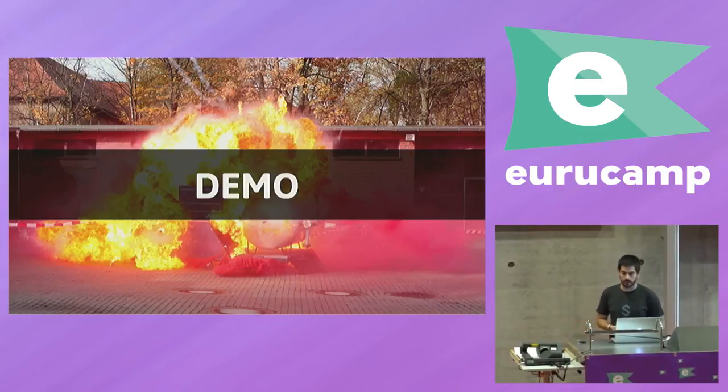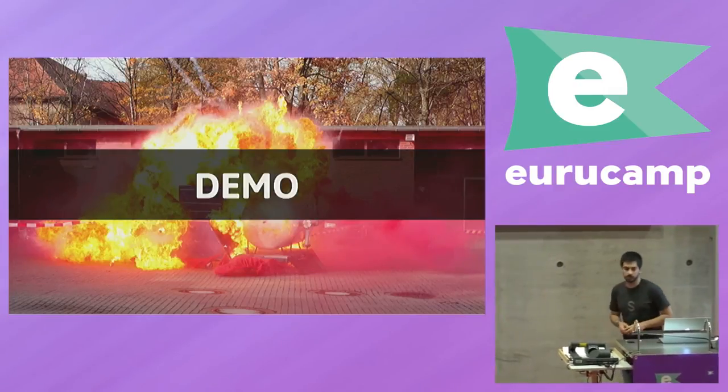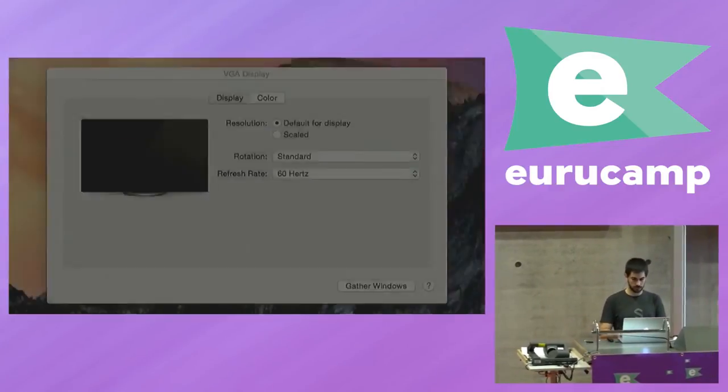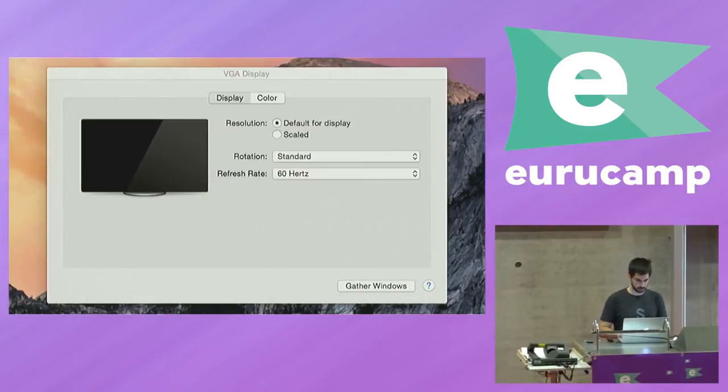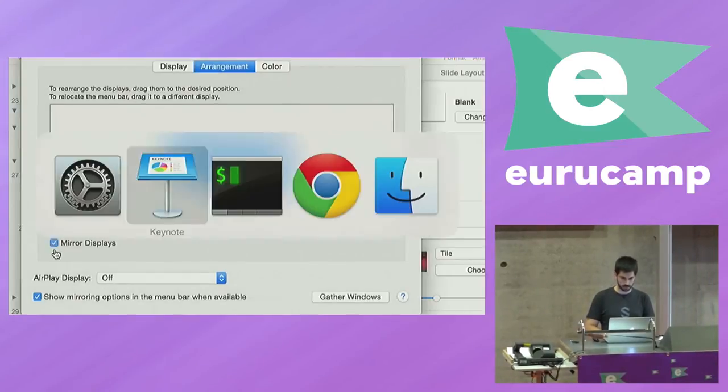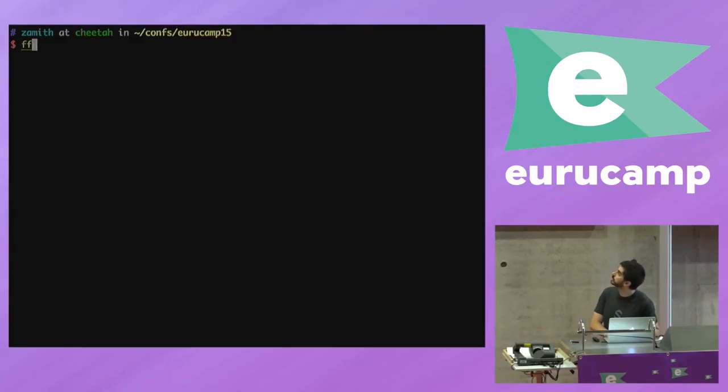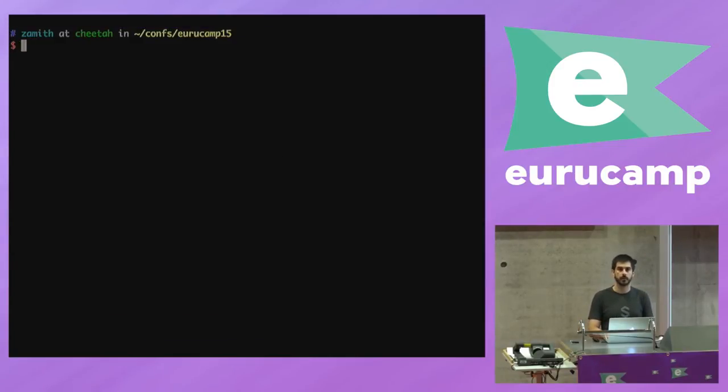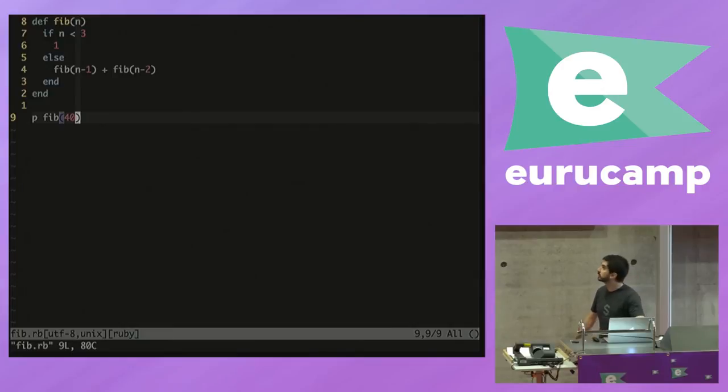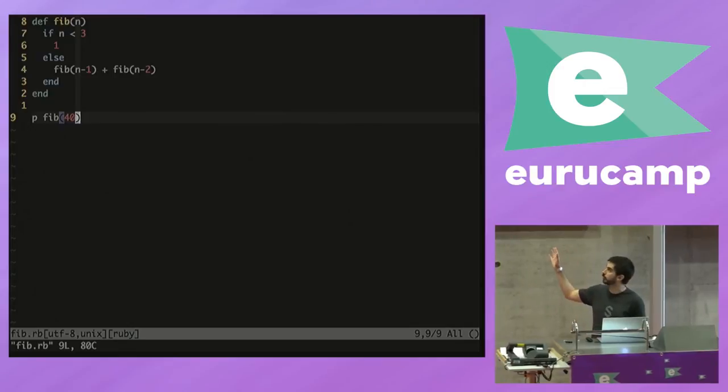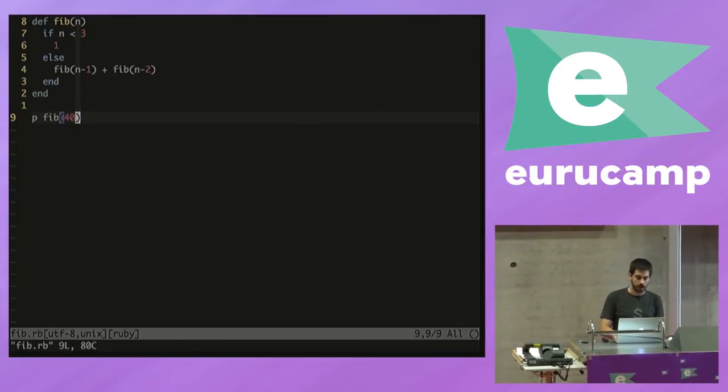Now I'm going to do a really quick demo and try not to blow too much things. Let's see if we can do this. Is the font good enough? Can you see it there? So I have here a Fibonacci sequence generator. Very simple. A recursive one. It's very simple. And it's written in Ruby. And it's printing the element number 40 of the sequence. So it generates the sequence, and it gets the 40th element, and it prints it. So very simple code. It should work just fine.